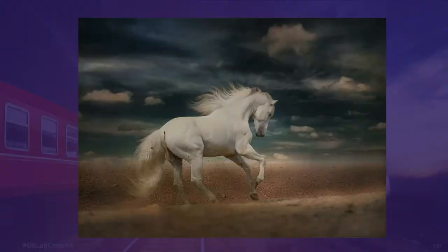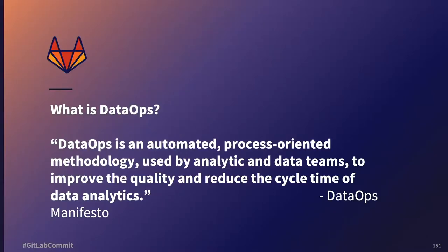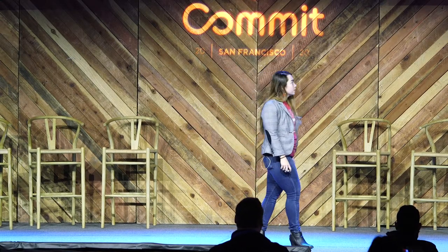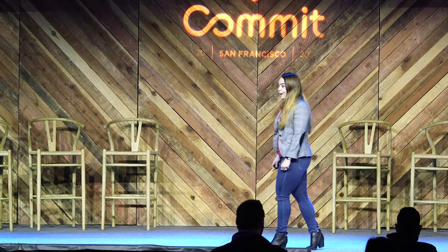Data integrity, data quality, and data reliability problems need to be solved before analyses make it out to your end user. Coming in on a white horse to save the day, much like a Disney fairy tale, is DataOps. So before we dig in, it's important to understand what DataOps is. DataOps is an automated, process-oriented methodology used by analytical and data teams to improve the quality and reduce the cycle time of data analytics. This comes from the DataOps manifesto. And if you're familiar with DevOps, certain parts of this sound familiar — reducing cycle time, improving quality.